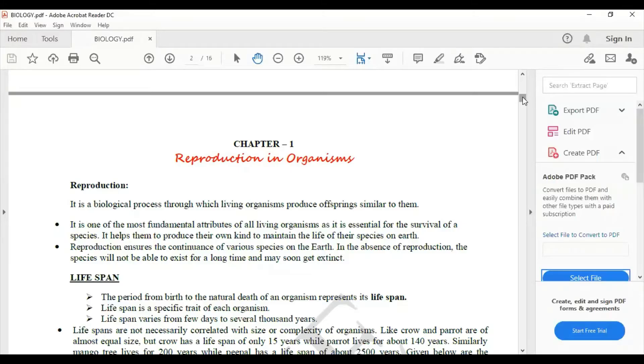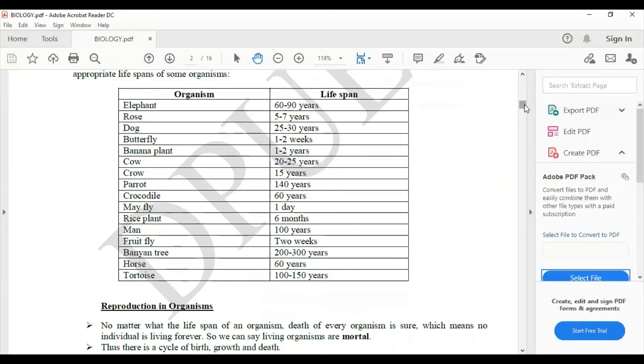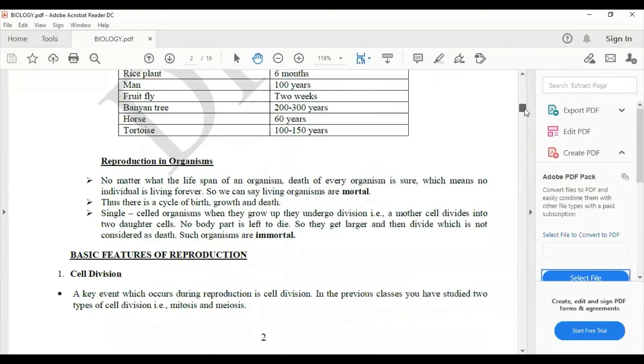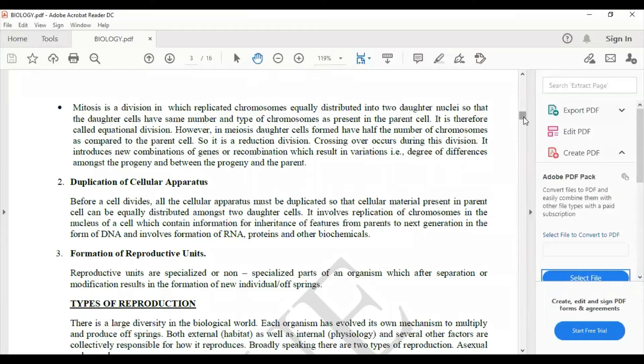The first chapter, reproduction in organisms, explains about the reproduction definition, lifespan and its definition, few organisms and their lifespans, reproduction in organisms in general, then basic features of reproduction - that is cell division, duplication of cellular apparatus, formation of reproductive units.